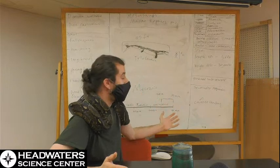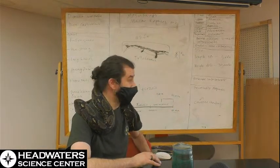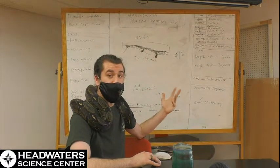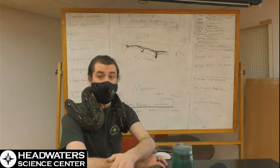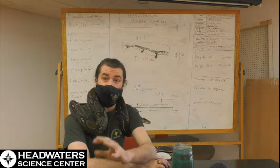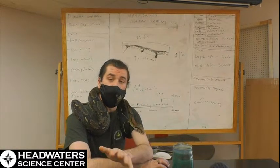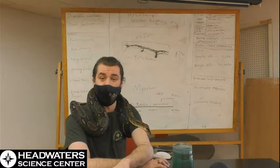Mosasaurs range in size. The smallest animals could be just about three feet long, maybe 60 pounds at most. And the largest ones could be about 56 feet, almost 60 feet long, and would weigh about 30,000 pounds. Now that is a very large animal, but I do want to remember - blue whales are 300,000 pounds, so they are 10 times the size of the largest mosasaur.